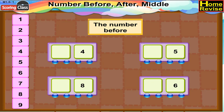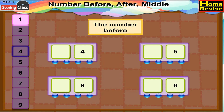The number before. Let us learn the concept of the number before. Here we have a train. In the later block, number 4 is written. And in the counting, what comes before 4? Well, let us count: 1, 2, 3, 4. So it has to be 3. Write 3 in the first block.